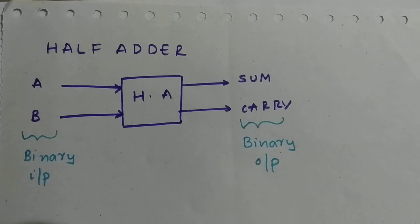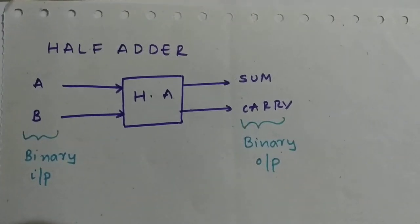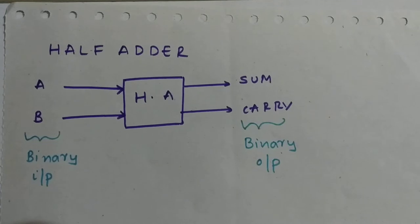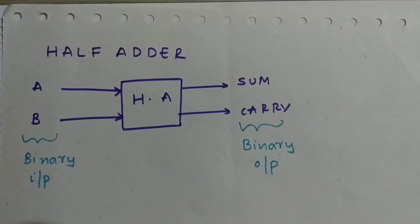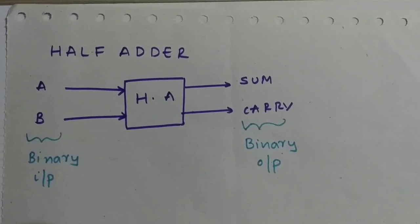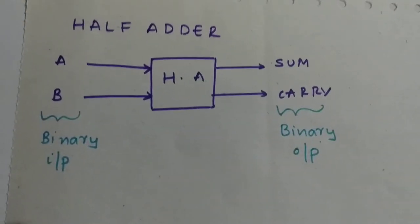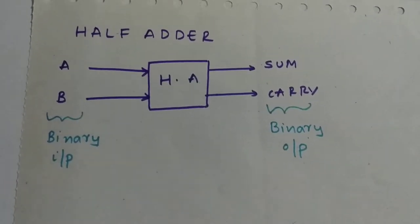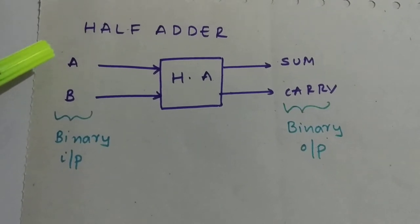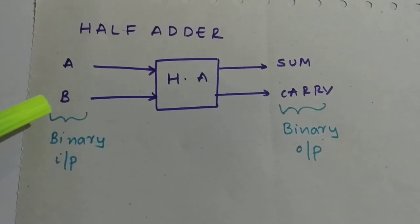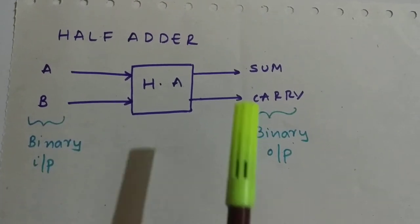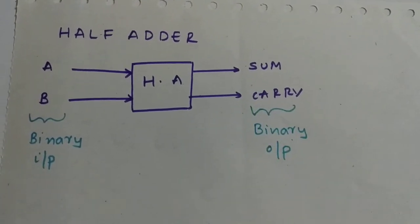So let us go into half adder. Half adder is an arithmetic circuit which is used to add two binary inputs. Using half adder we can add only two single bits. Here A is a single bit and B is a single bit, so we'll get the output as sum and carry.